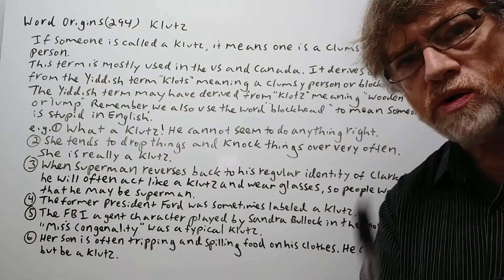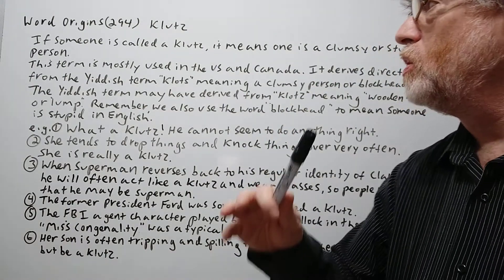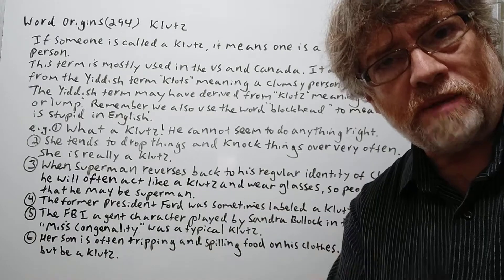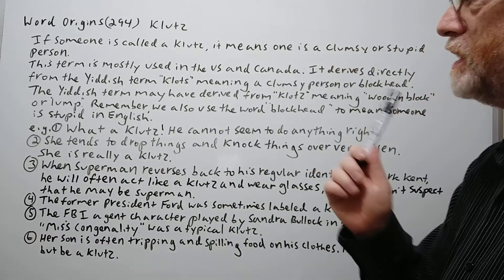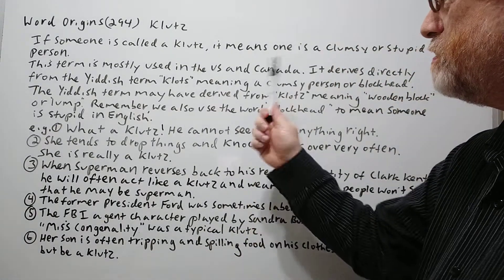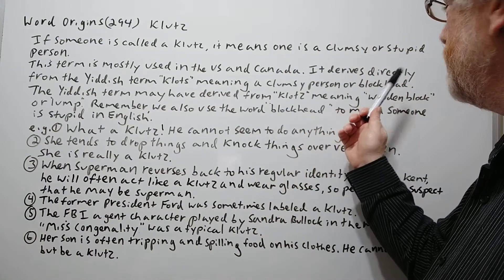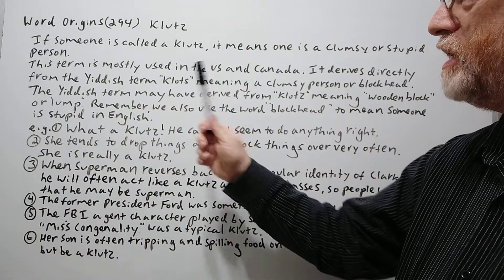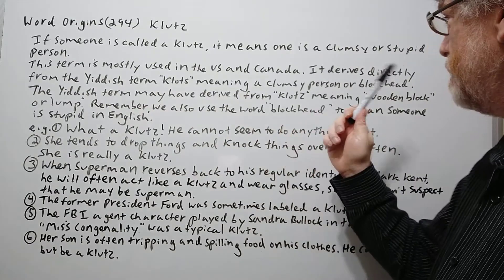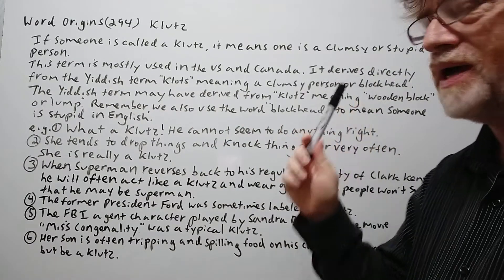If someone is called a klotz, it means one is clumsy or a stupid person. So a clumsy person or a stupid person. The term is mostly used in the U.S. and Canada. It derives directly from the Yiddish term klotz, meaning a clumsy person or blockhead.